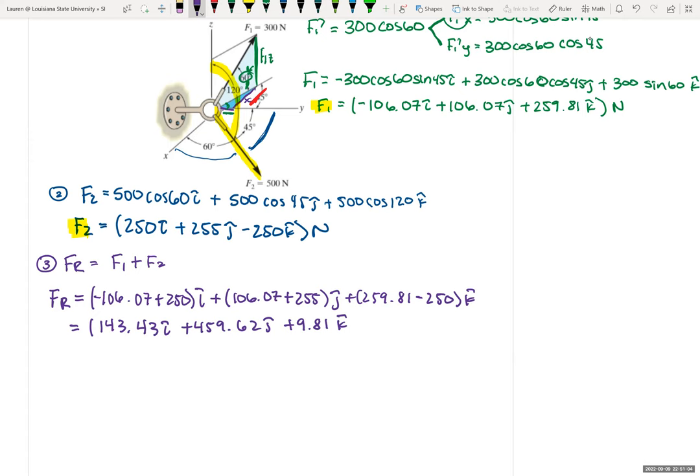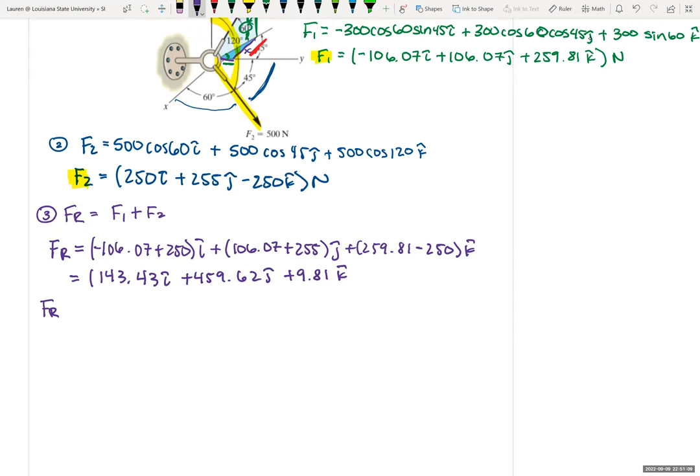Okay. To find the final FR, we have to square these and square root them. So we'll get 143.43 squared plus 459.62 squared plus 9.81 squared. So we get that FR equals 481 Newtons.